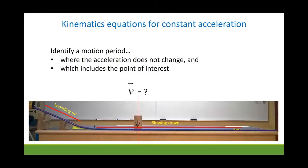Well, there are two periods where the acceleration is fairly constant: when it's coming down the slope, and when it's sliding across the horizontal tabletop. Our point of interest is on the horizontal tabletop. So the slope is actually of no value to us.